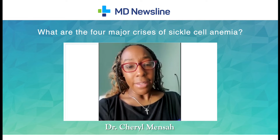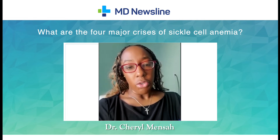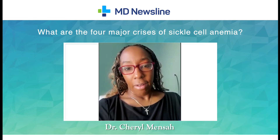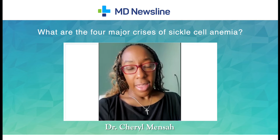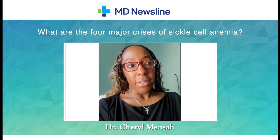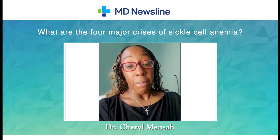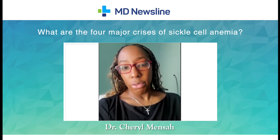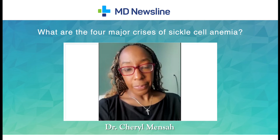Aplastic crisis is a little bit less common. Usually these are triggered by viral infections, and it affects the bone marrow's ability to produce red blood cells.